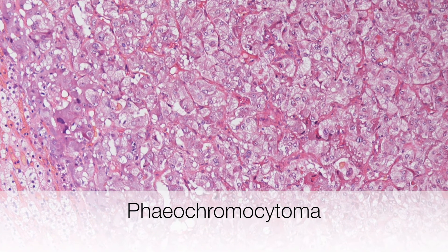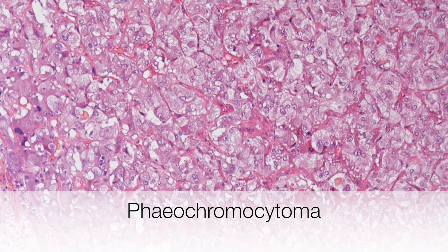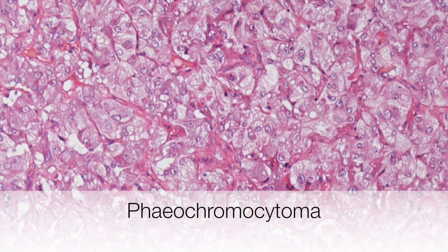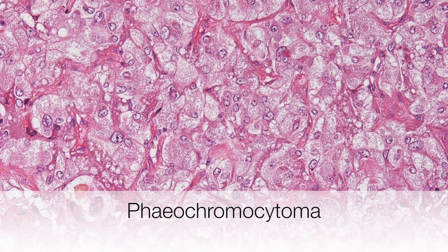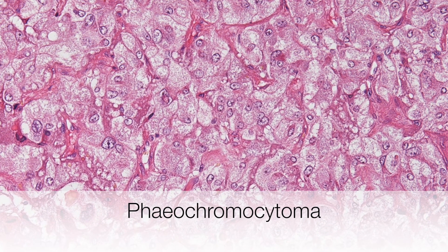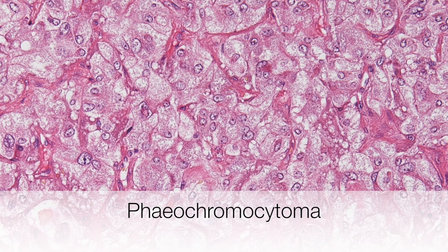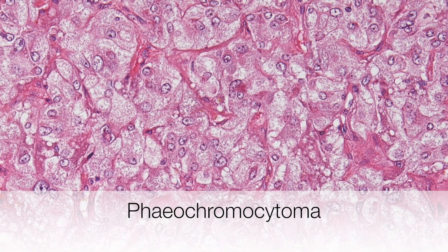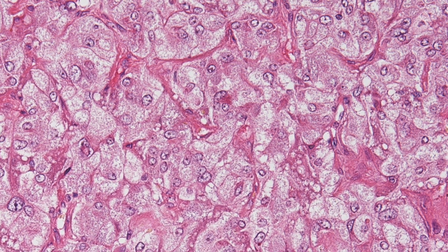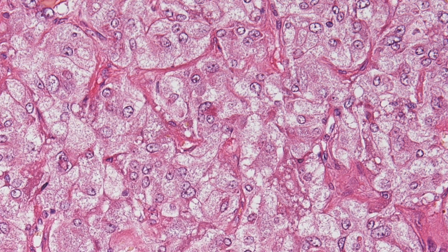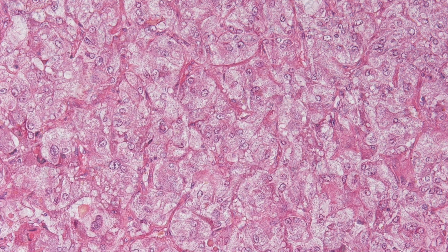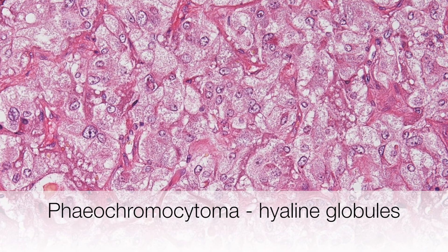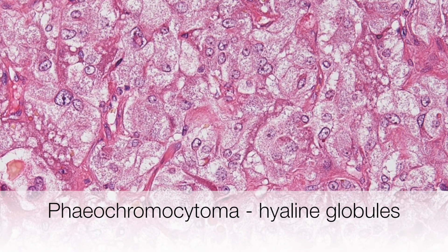At a higher power, you can see the abundant pale staining cytoplasm and the fine fibrovascular stroma that the tumour cells lie in. At an even higher magnification, one can see the tumour cells are arranged in nests or zellballen, and the cytoplasm can be appreciated to be pale staining and finely granular. The nuclei show a bit of pleomorphism and have prominent nucleoli. Here you can see the hyaline globules within the cytoplasm coming into the centre of the picture.